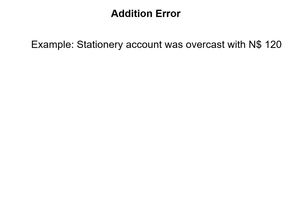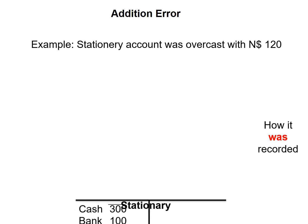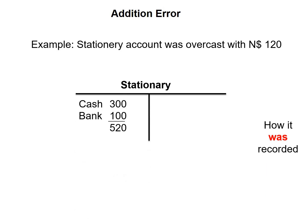Let's have a look at an example. Stationery was overcast with 120. That means we recorded stationery with 120 dollars more than we should have recorded. Looking at how this was recorded, stationery will have cash of 300 and bank of 100, so we recorded 520 instead of 400.